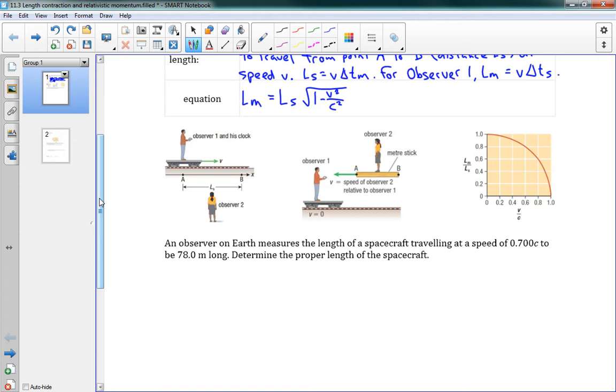This last picture shows the ratio of Lm over Ls. As speed gets closer to C, you see that the size shrinks more and more. When we're moving very close to zero or not much, then the ratio here is the same. But as the speed increases, length contracts more and more.